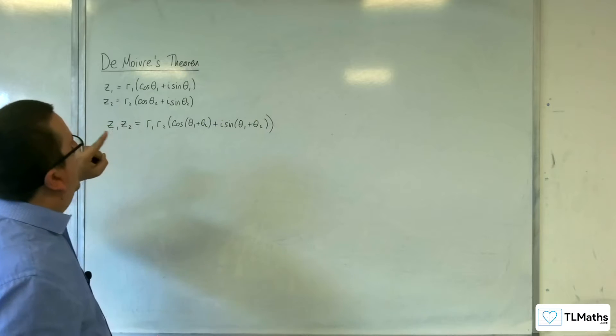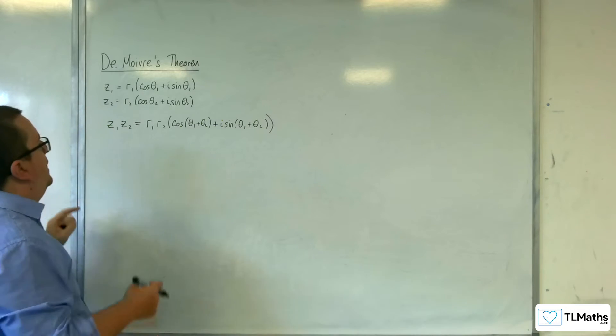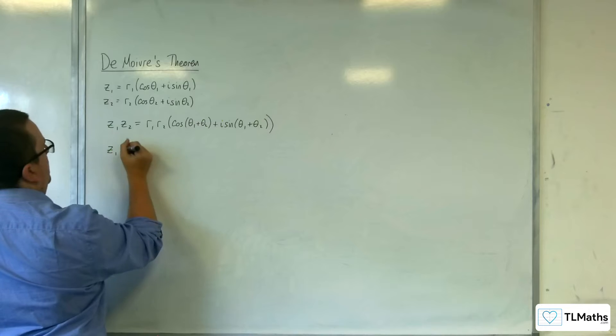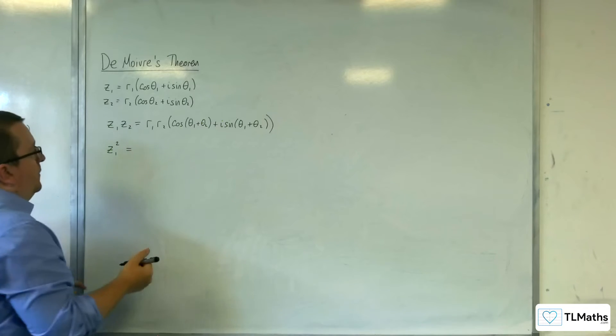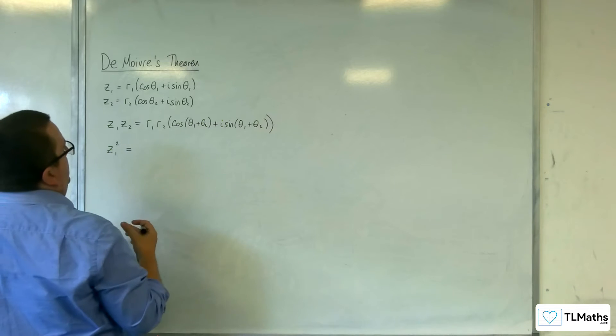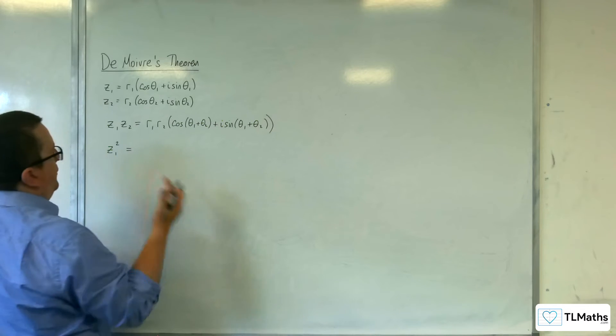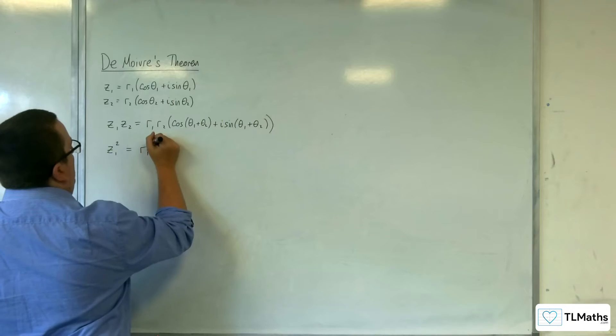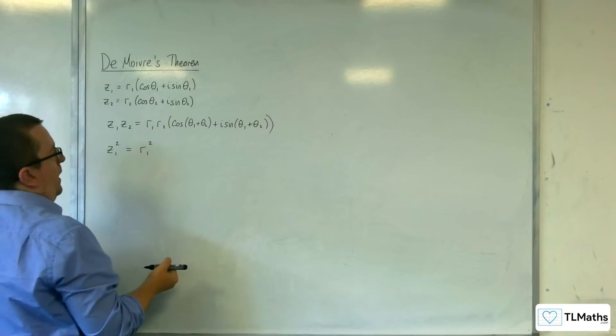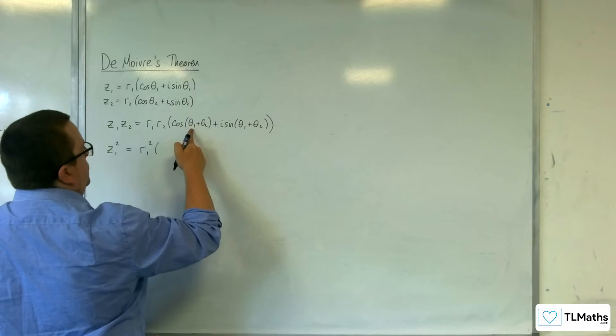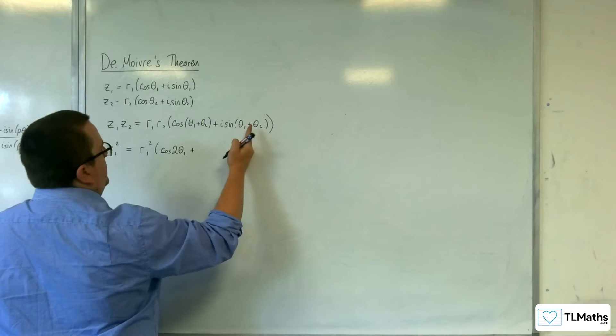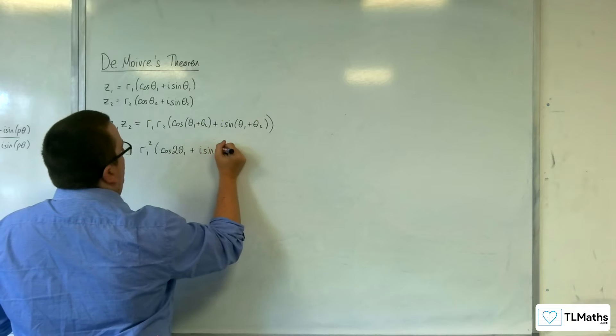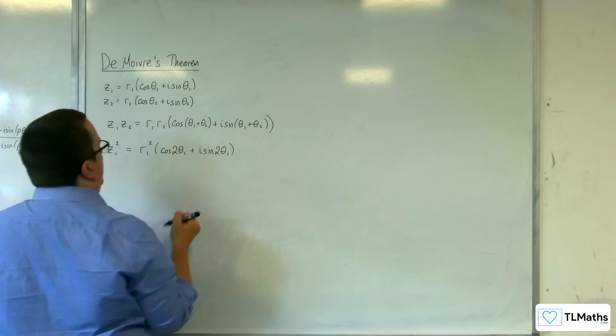Now, if we'd actually done Z1 times Z1, so Z1 squared, then the idea would be that having done Z1 times Z1, I would have r1 times r1, which would be r1 squared, and you'd have cosine of theta1 plus theta1, which is cosine of 2 theta1, and you'd have theta1 plus theta1 here, so i sine of 2 theta1.